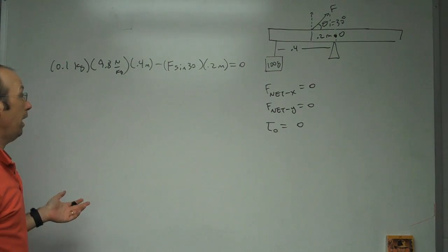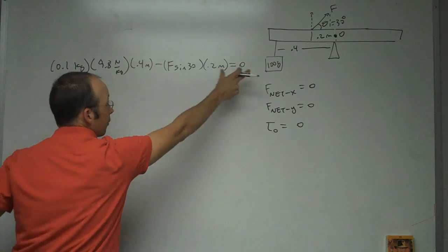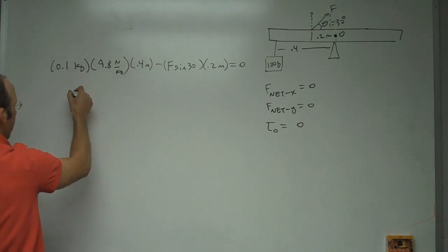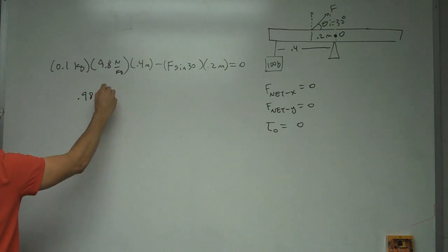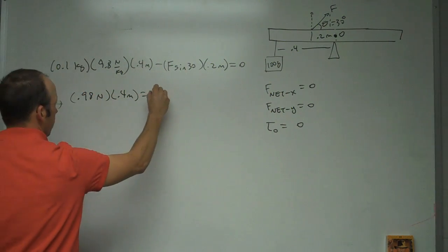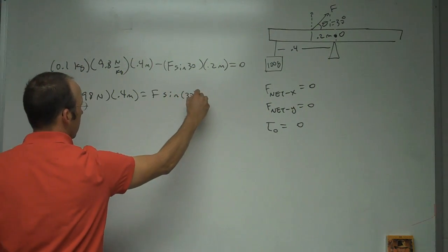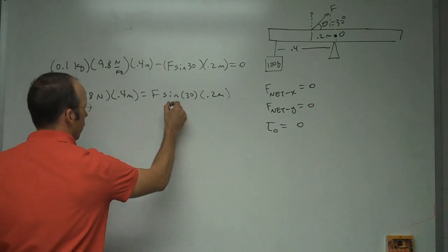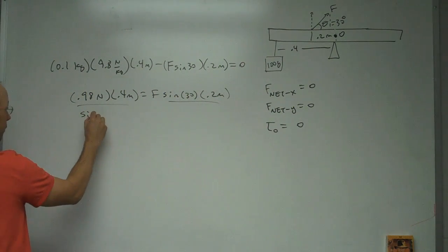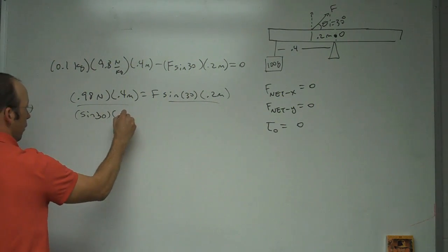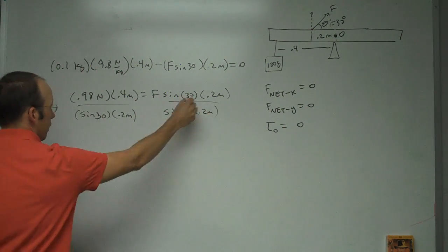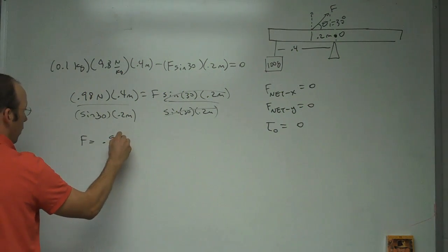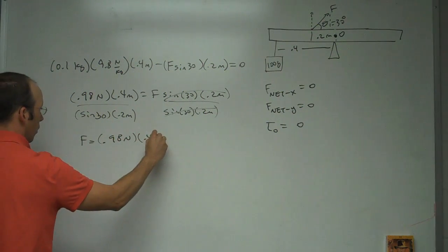And so now I just want to solve for F. So I'm going to add this to both sides of the equation, so this side cancels, and I get, let me just multiply that out. Point one times nine point eight is 0.98 newtons times 0.4 meters equals F sine of 30 times 0.2 meters. And then I'll divide both sides by sine of 30 times 0.2 meters, and that cancels. And I get F equals 0.98 newtons times 0.4 meters.